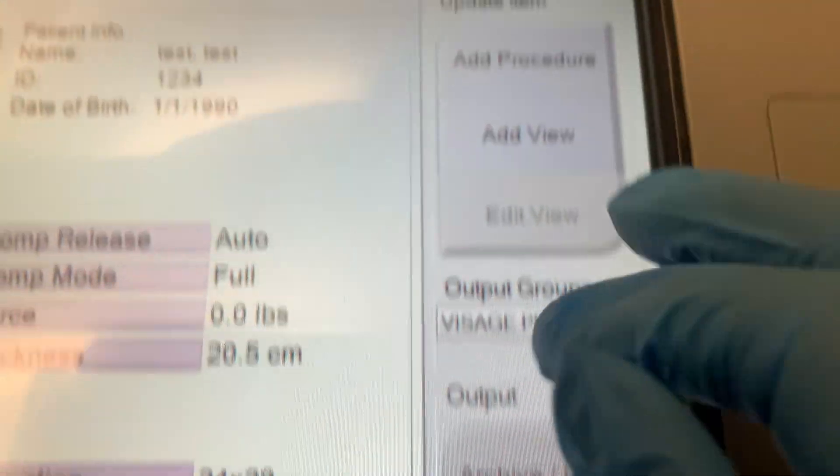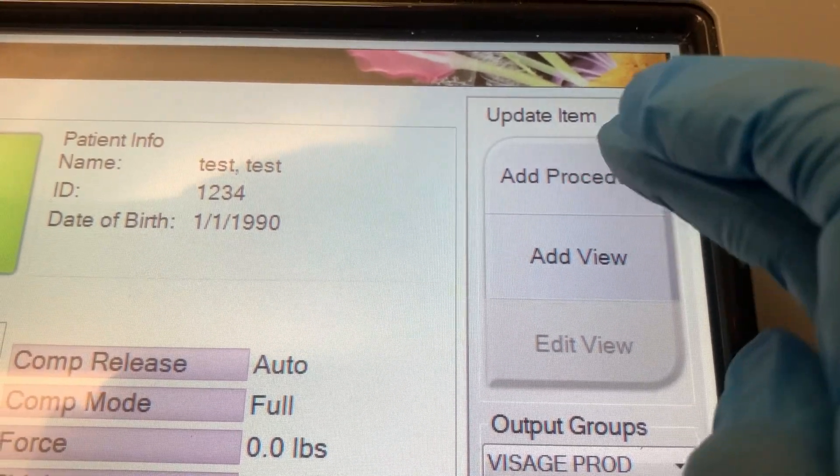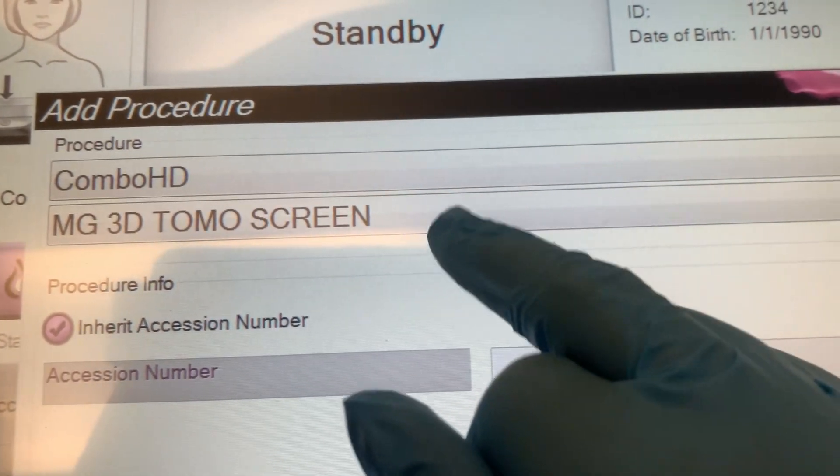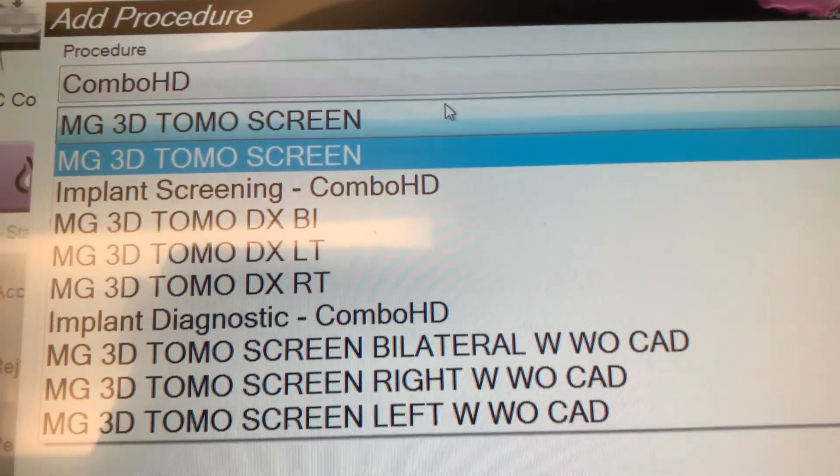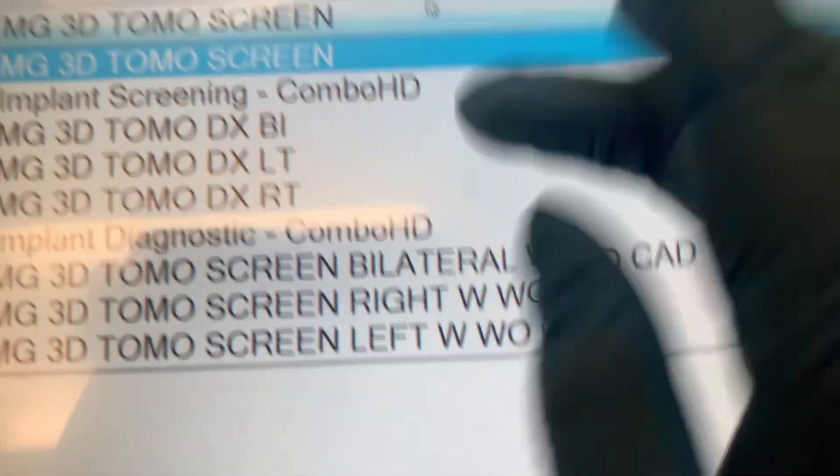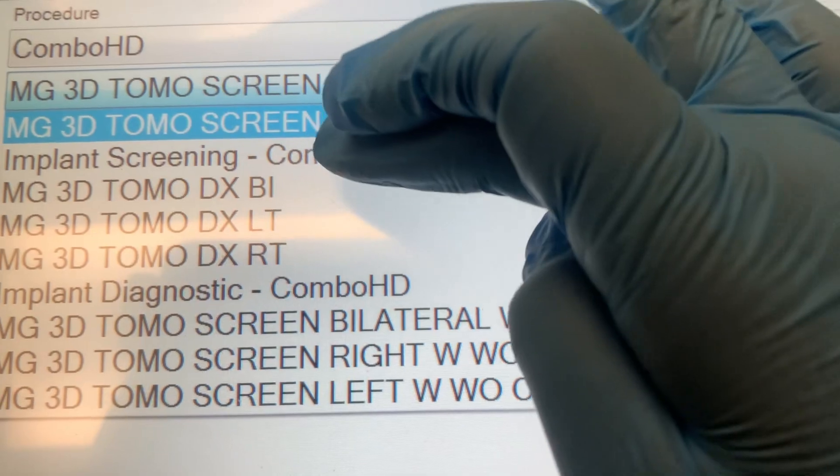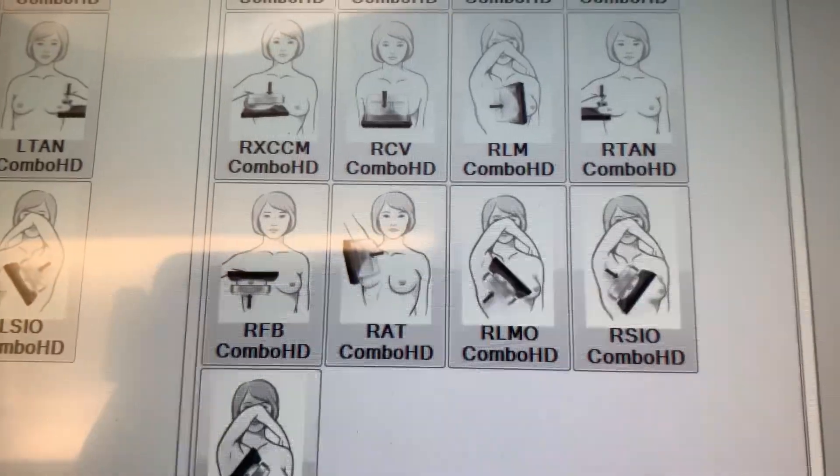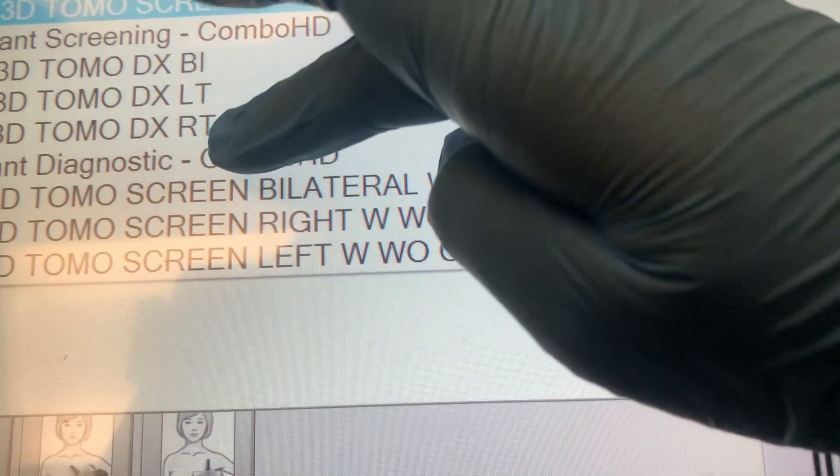And then to add a procedure, like for implants, you can go right there. You can go right there. And then you have different settings. And then I just hit implants.